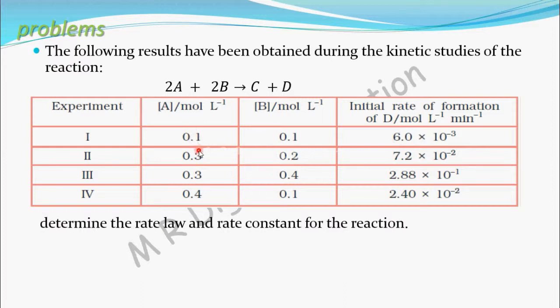In the second experiment, concentration of A is 0.3 and concentration of B is 0.2, and the initial rate is 7.2 × 10⁻². Similarly, he conducted experiments 3 and 4. From this table we have to find the rate law and rate constant.